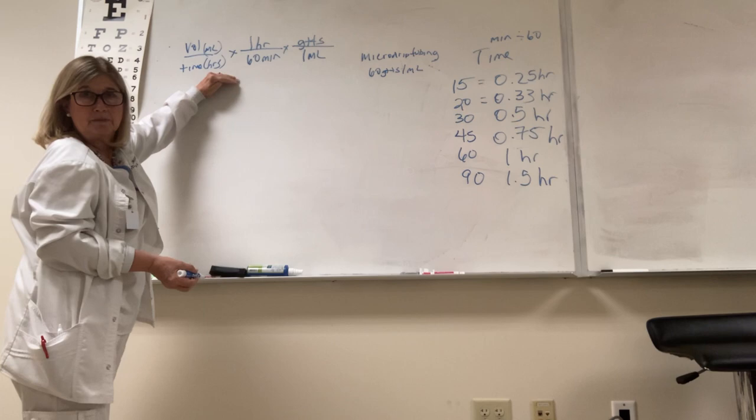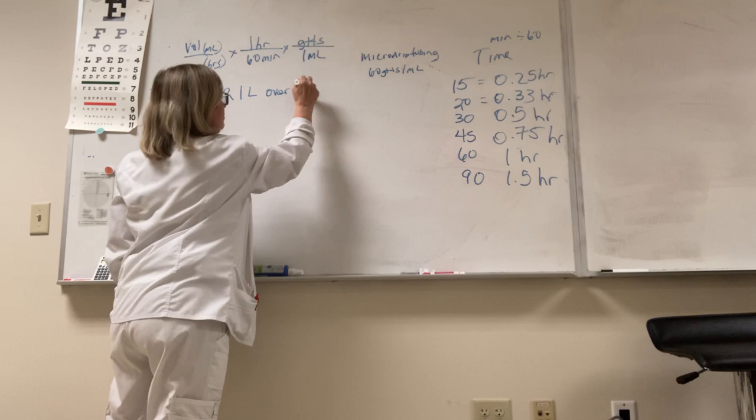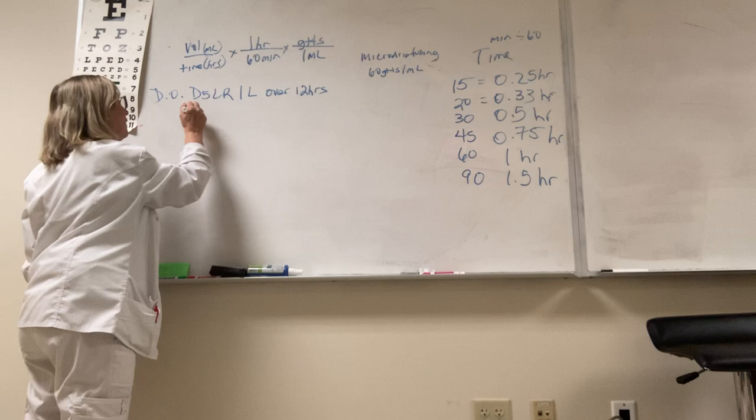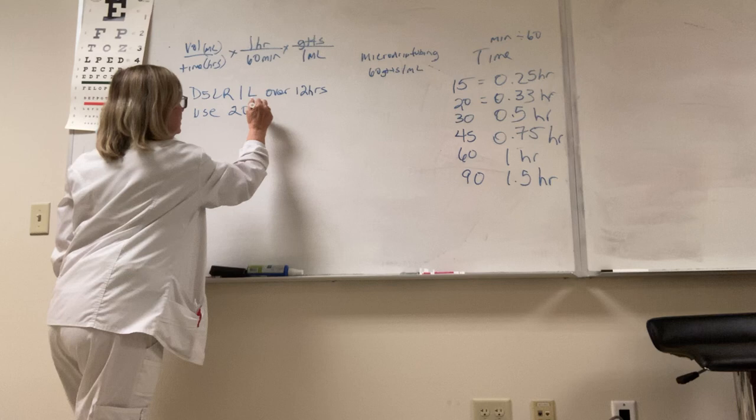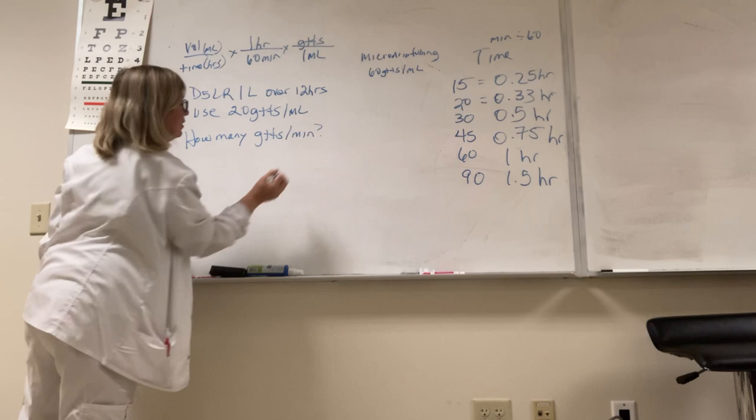So let's make that go back to that lactated ringers. The doctor has ordered d5 and lactated ringers 1 liter over 12 hours and it is to use standard tubing - 20 drops per milliliter. How many drops per minute?